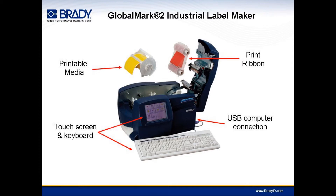Once the label is created in Markware, you can print directly to Brady's GlobalMark printer. The tapes and ribbons come separately, allowing you to mix and match colors. The tapes come in four different widths, ranging from one-half inch all the way up to four inches wide. The GlobalMark also includes a touchscreen and keyboard, allowing standalone functionality — so if someone needs to create a simple label or pipe marker on the spot, they don't need to log on to a computer.